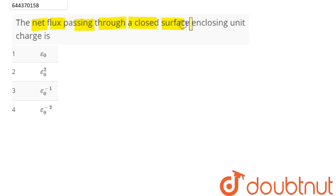So we can say here, suppose let's say this is our closed Gaussian surface which is enclosing here a unit charge. That is, we can say here the charge here is plus one coulomb.